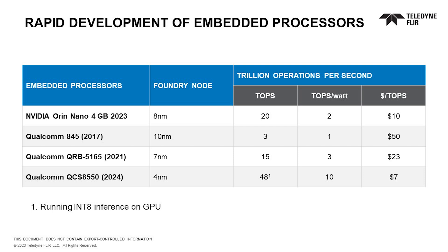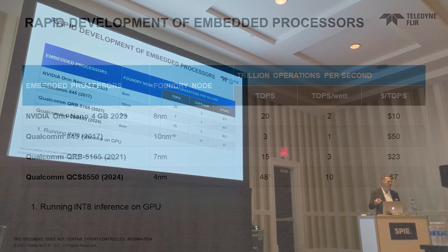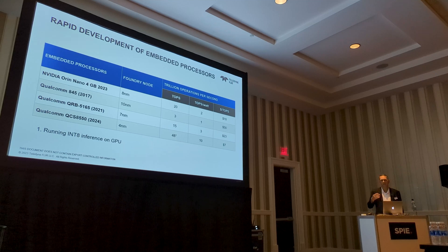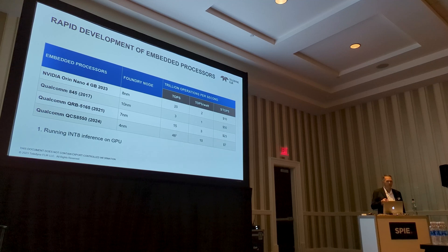The cadence going on in the mobile processor space is just incredible. In this generation we've gone from a part generally available initially in 2021 to what's available now — we've gone to a smaller node and seen a huge increase in compute power, while cost and power continue to go down. The pressure in the mobile handset space to put large language model inference on-device — the competition between Qualcomm and Apple Silicon — is just going to drive innovation and performance for these types of processors.